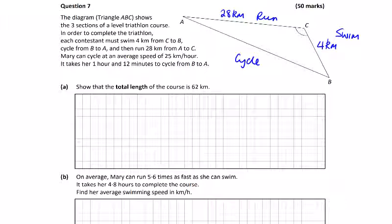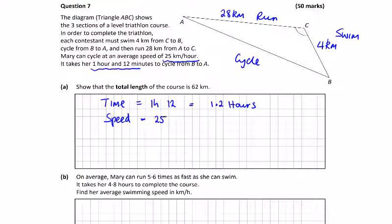Mary can cycle at an average speed of 25km per hour and it takes her 1 hour and 12 minutes to cycle from B to A. So we're given time: 1 hour 12, which equals 1.2 hours (12 minutes being a fifth of 60). We also have her speed, which equals 25. So distance equals 25 multiplied by 1.2, which is 30km. Let's put our 30 in here.